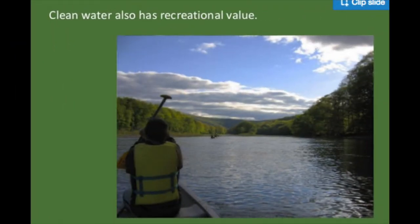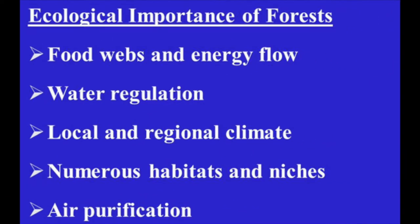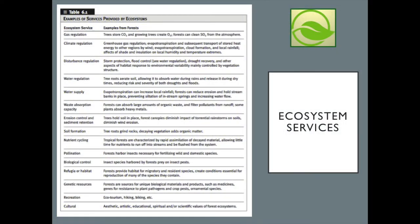Clean water also creates important services that support cultural and spiritual elements within communities. There are many critical ecological services that forests provide: food webs and energy flows, water regulation, local and regional climate support, numerous habitats and niches, air purification, and cultural and spiritual activities. These are the kinds of ecosystem services that must be considered when evaluating the sustainable yield curve and appropriate harvest levels. Does the critical depensation and maximum sustainable yield values consider all of the ecosystem services that a forest provides? You can begin to see why these yield curves are complex and difficult to use in practice. Your textbook offers many more critical ecosystem services in Table 6.1.